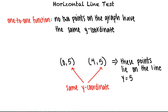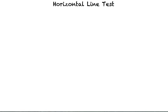If we're given the graph of a function, we can use the horizontal line test to determine whether the function is 1 to 1. If we're able to draw a horizontal line that intersects the graph more than once, then the graph fails the horizontal line test. This means the function is not 1 to 1.